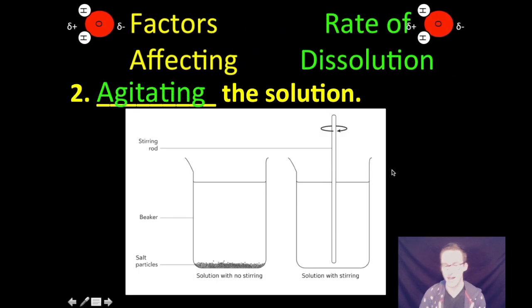Two! The second factor that will affect the rate of dissolution is agitating—you are getting on my nerves—the solution. When you agitate something in terms of the dissolution process, what we're talking about is messing with it, stirring it, mixing it, shaking it, some way causing your solvent particles to move around more.